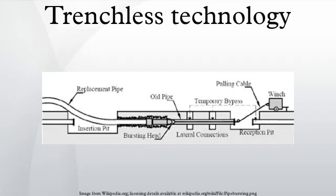Trenchless rehabilitation includes such construction methods as slip-lining, thermoformed pipe, pipe bursting, shotcrete, gunite, cured-in-place pipe, grout-in-place pipe, mechanical spot repair, and other methods for the repair, rehabilitation, or replacement of existing buried pipes and structures without excavation, or at least with minimal excavation.